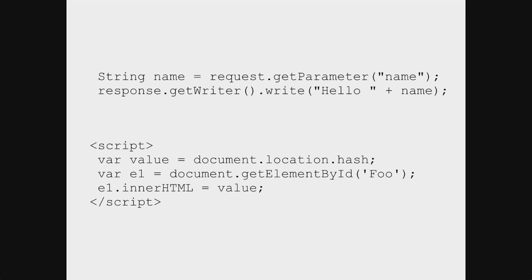How does this look from a code perspective? You mainly have two families of XSS. The first one is the old school XSS — the most classical one. There is a request and the server — this is a Java snippet, a very lame Java snippet — the request is taken as input from the server, processed, and sent back to the user. Classical XSS. Of course there can be a number of sources; it doesn't have to be the request, it can be a database.